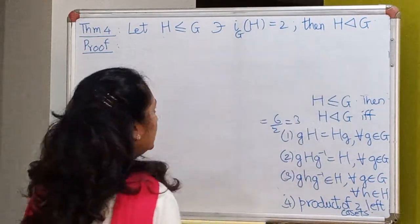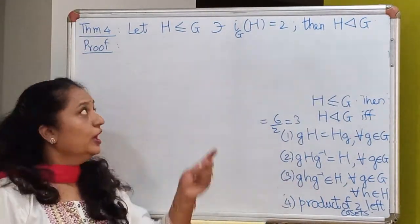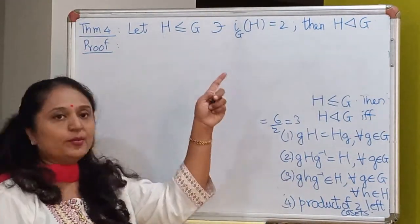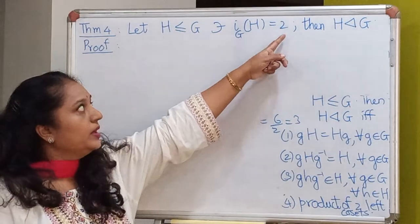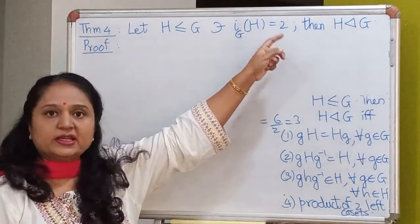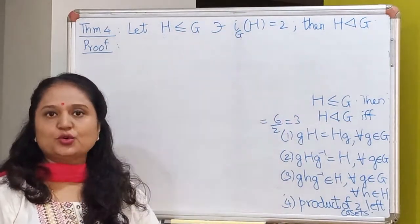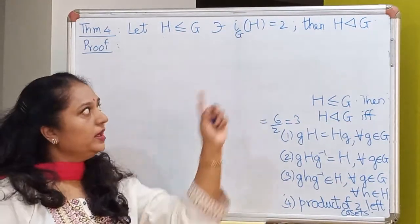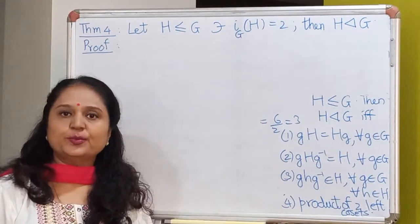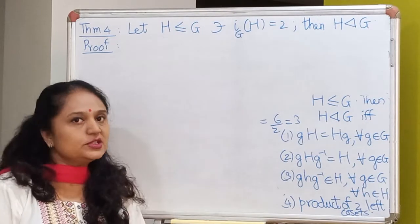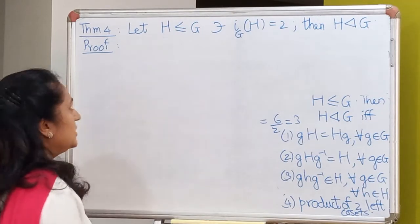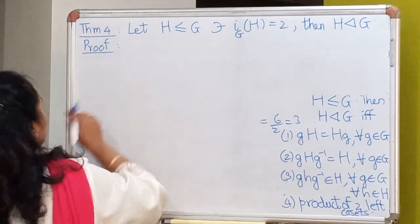This result works in one direction only: if you have a subgroup whose index is 2, then it has to be normal in G. Let's use this in an example.